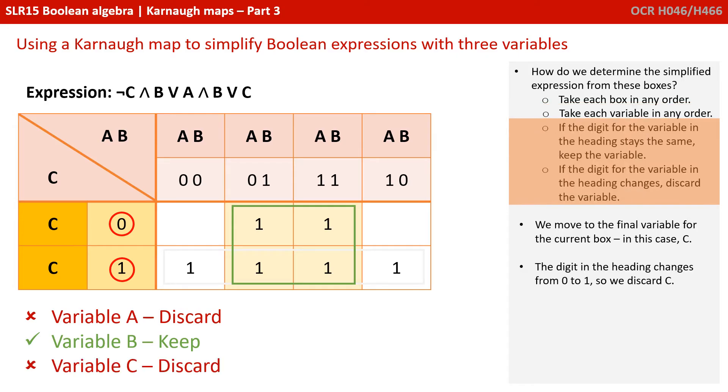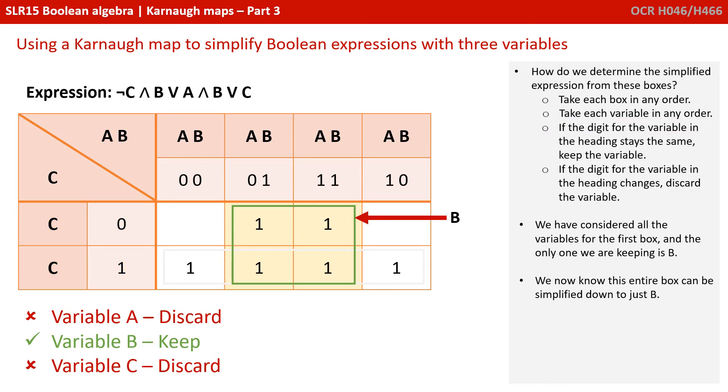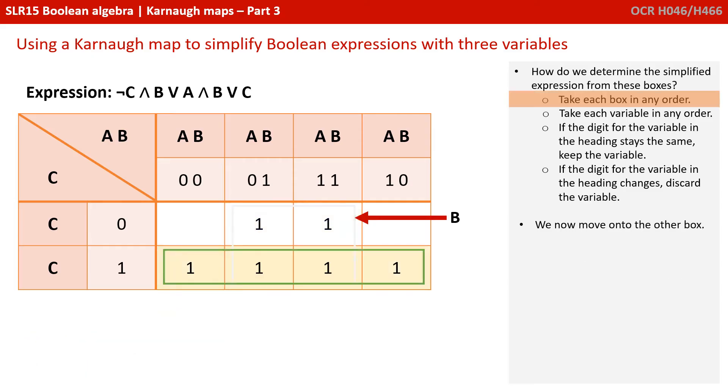We move on to the final variable for this current box, which is C. And, of course, we can see here the digit for C in the heading is changing. It's a 0 and it's also a 1. So, we discard C. Okay, we've considered all the variables A, B and C for the first box. And the only variable we're keeping according to our rules is B. So, you now know for sure that this entire box can be simplified down to B.